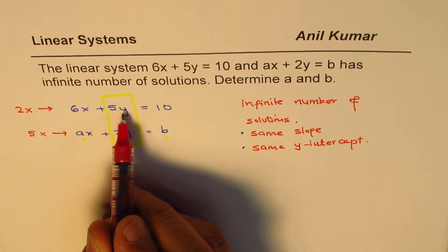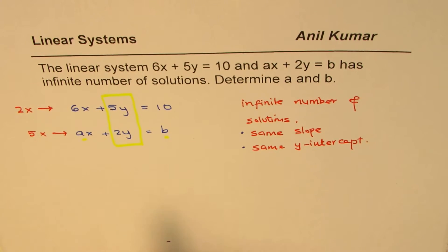If we do that, we get 10y for both. And then comparing the others, we'll get the value of a and b. So that is the strategy.